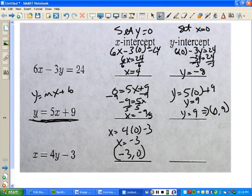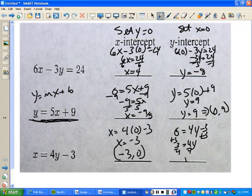To find the y, you set x equal to 0. So 0 equals 4y minus 3. Add 3 to both sides. 4y equals 3. Divide by 4, divide by 4, and you'll get y equals 3 fourths.